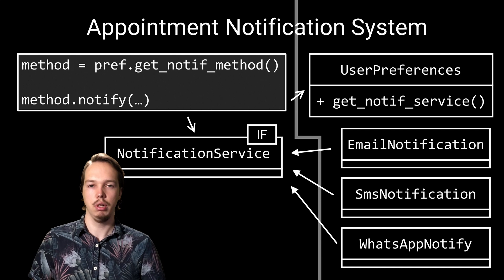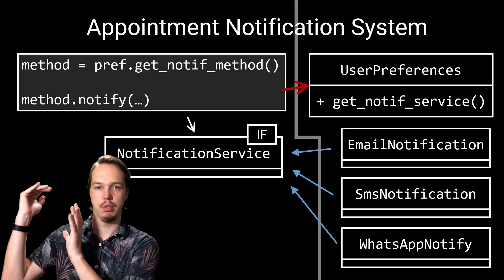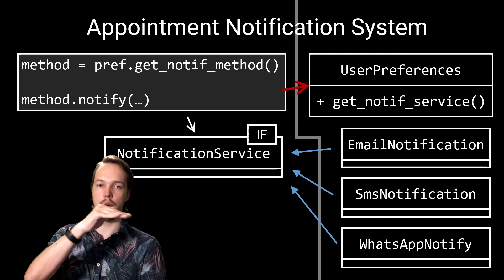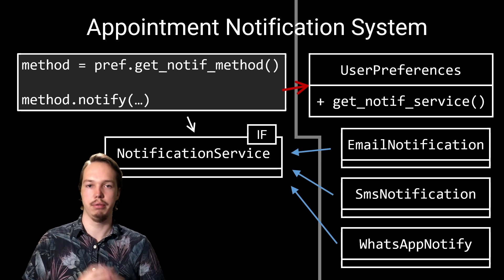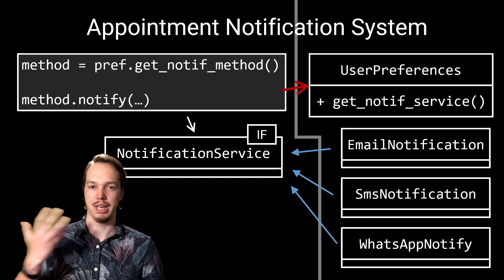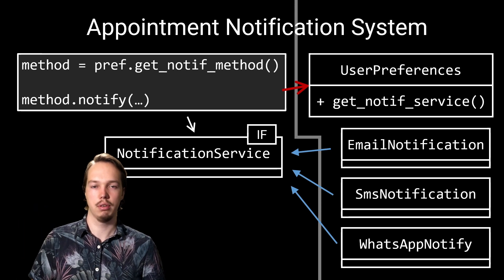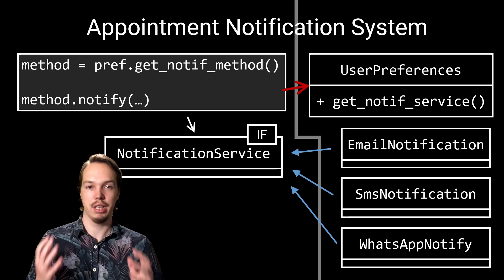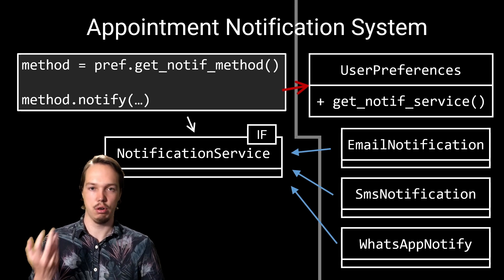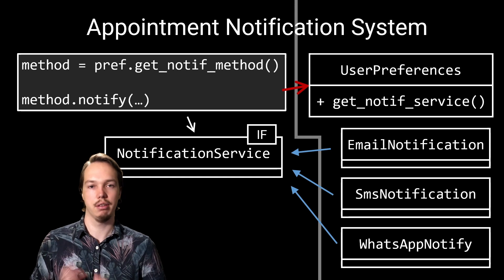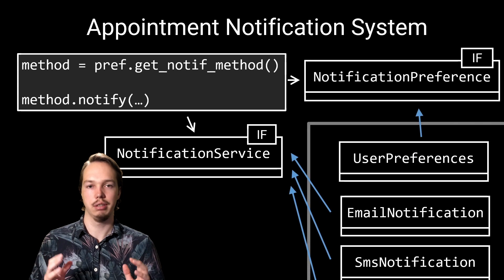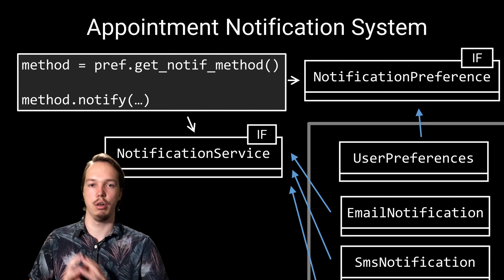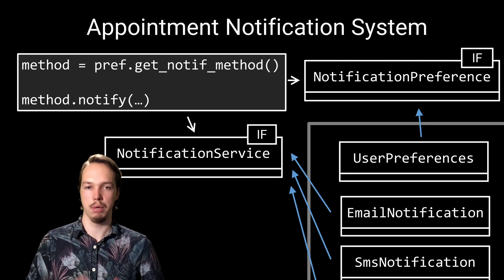Going back to our example, we see that we still have one dependency going from the business logic to a lower-level component — namely the user-preferences component. This means that if you want to extend or change this user-preference component, we still impact our business logic. The only part of the user-preferences that is of interest to our business logic is the notification preference. So, keeping in mind the interface segregation principle, which we discussed in the previous episode, let's introduce an interface that abstracts just that part. The user-preferences class can now implement our notification-preferences interface, completing our design.